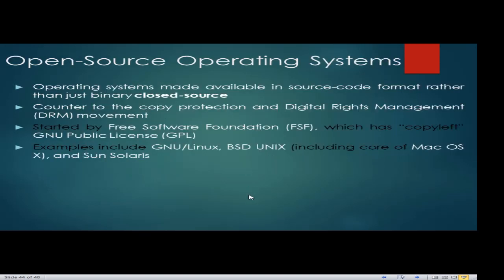Open source operating system: open source means this is free. An open source OS is made available in open source format rather than just binary closed source, which is counter to the copy protection and DRM movement. The GPL, Linux, and Unix are examples of operating systems considered open source.